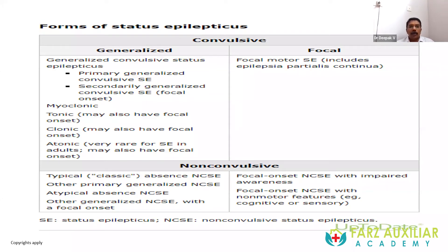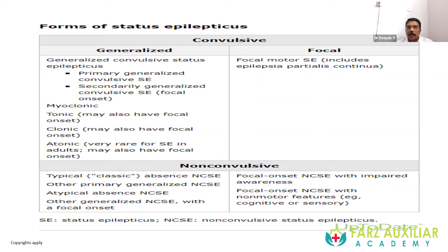From a practical point of view, status epilepticus can be broadly classified into convulsive and non-convulsive. Convulsive status epilepticus can be generalized or focal. Generalized status can be primarily generalized or start as focal and become secondarily generalized. It can also be due to continuous myoclonic activity, or tonic, clonic, and atonic movements. Sometimes there will be only focal seizures without generalization, called focal convulsive status epilepticus.